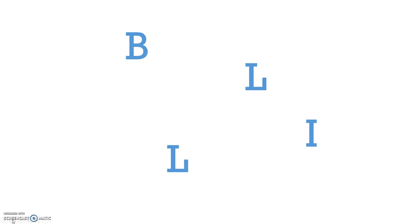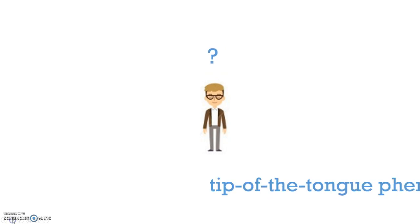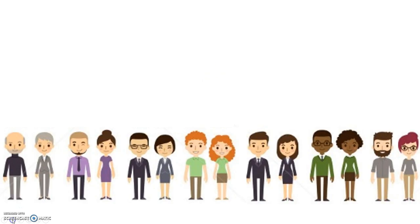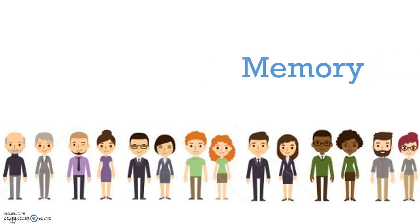Maybe you've met someone once or twice and see them again in a different setting a few days later. If you run into Bill at the grocery store next week but cannot recall his name, that's known as tip of the tongue phenomenon, or the feeling of knowing. And that's your concept clipped on memory.